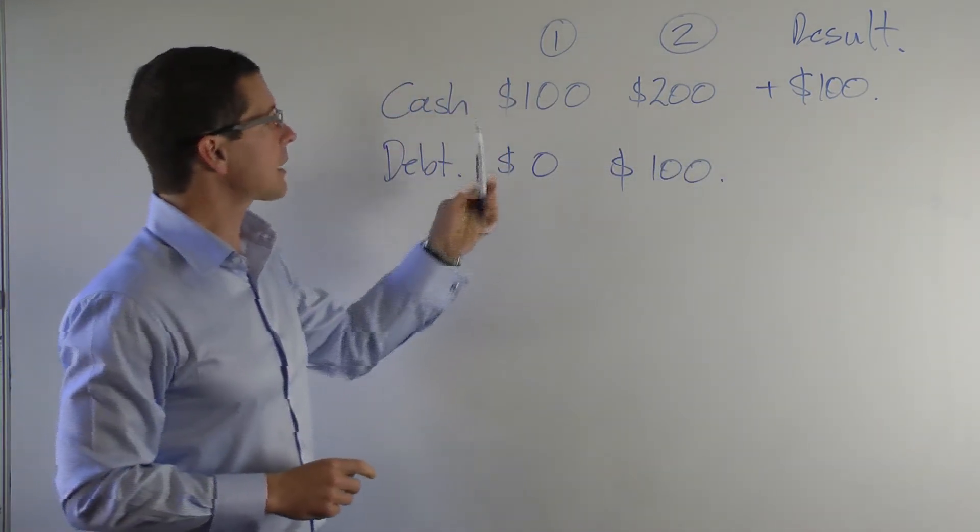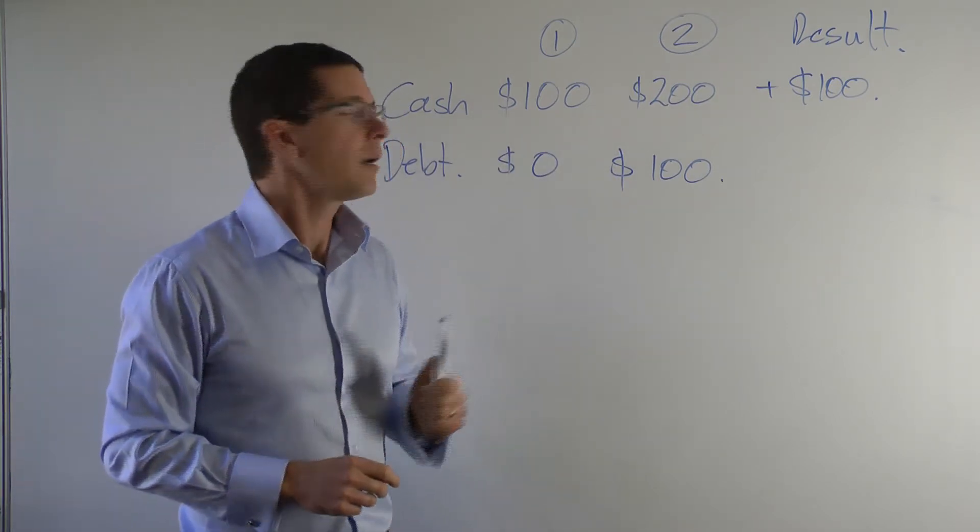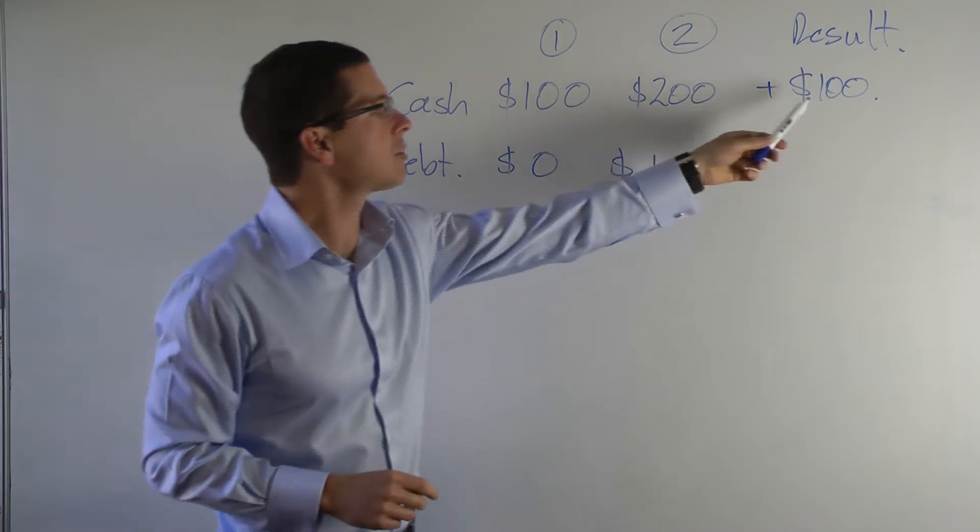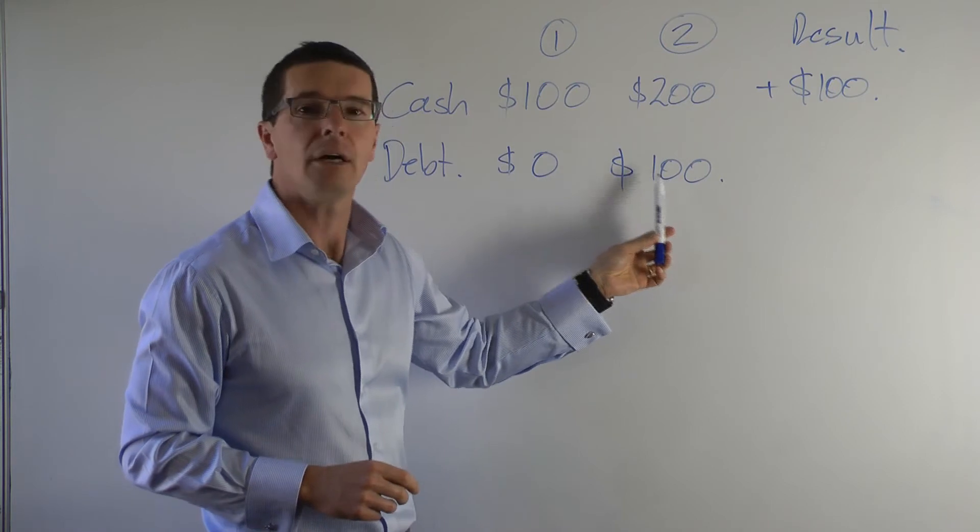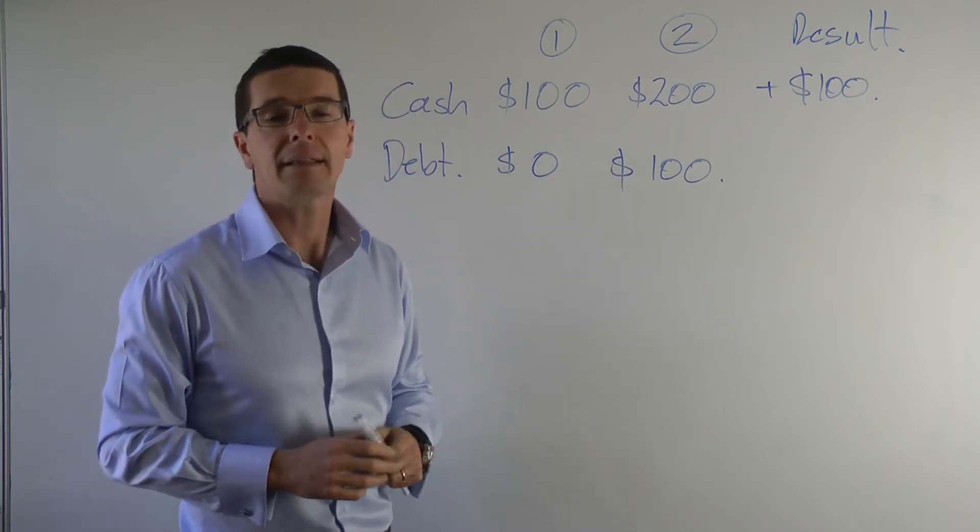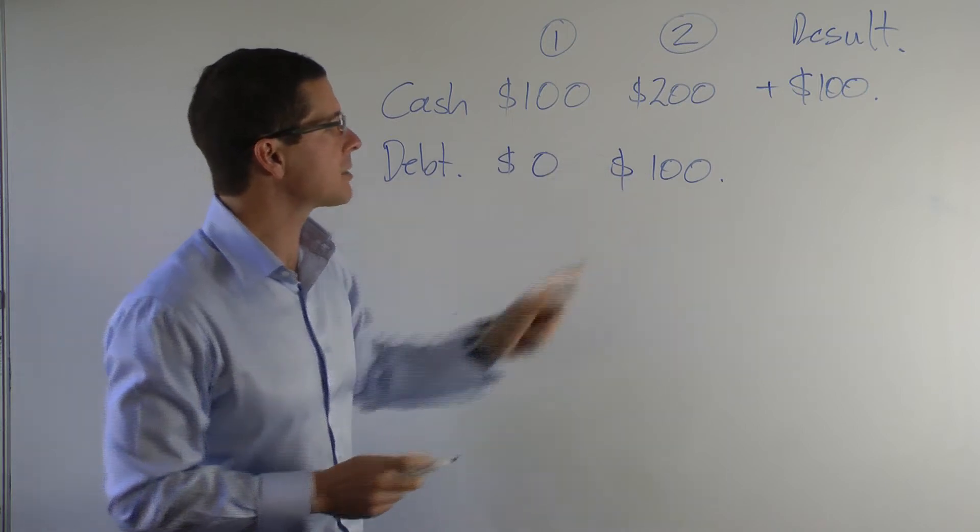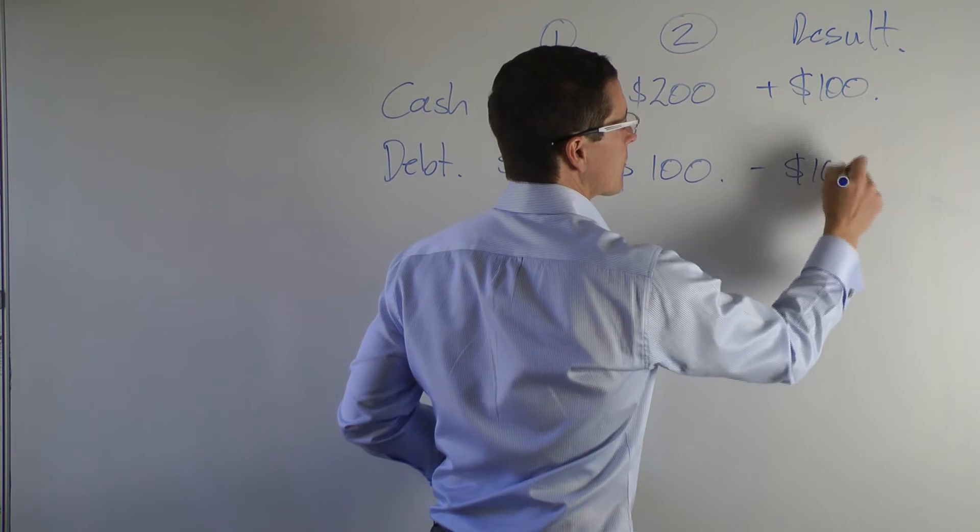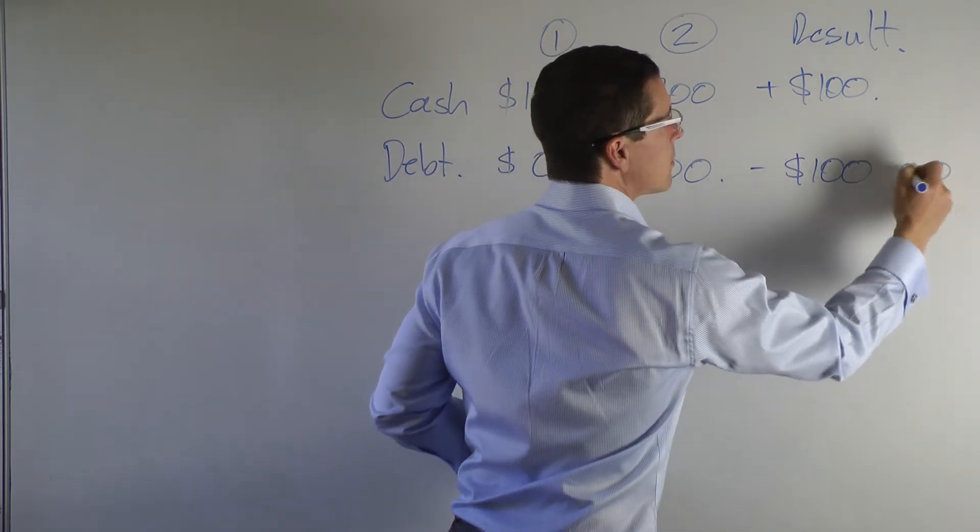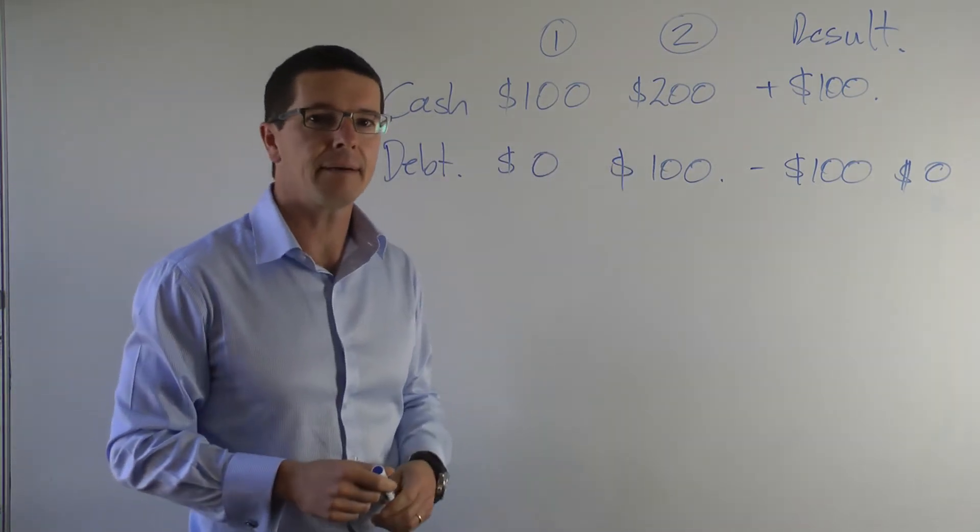What that means is that the $100 increase in cash is totally and completely due to the borrowings that the company has taken on. In other words, because that amount has gone up by $100, the net result is break-even. This company has made no money this year.